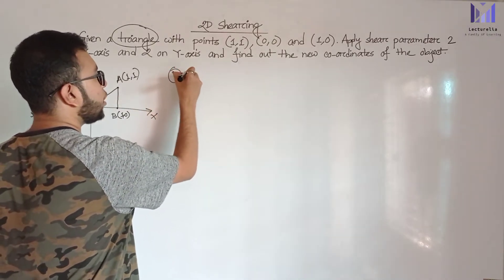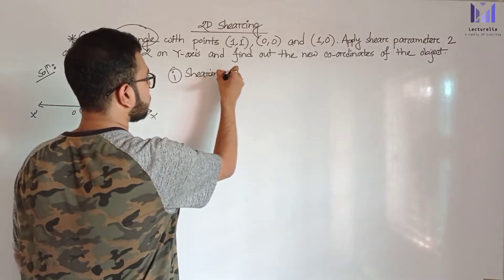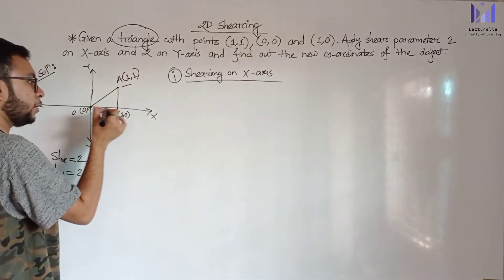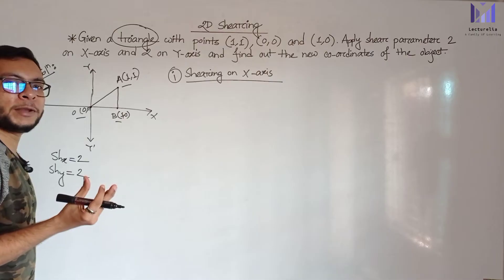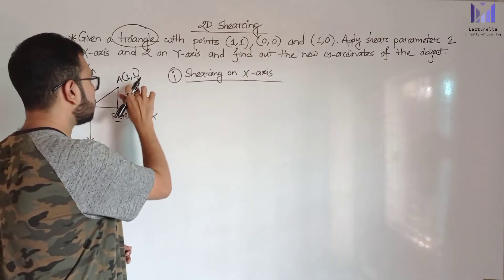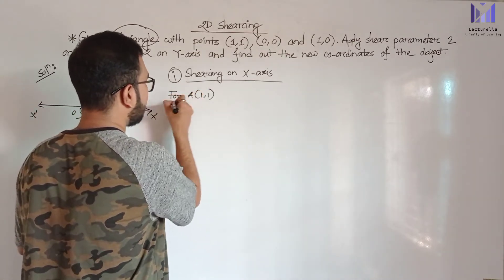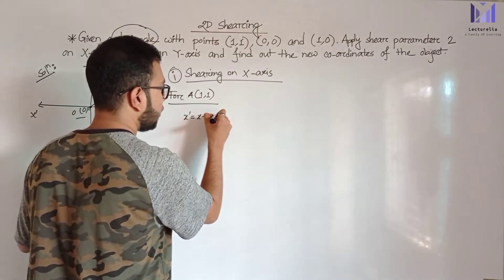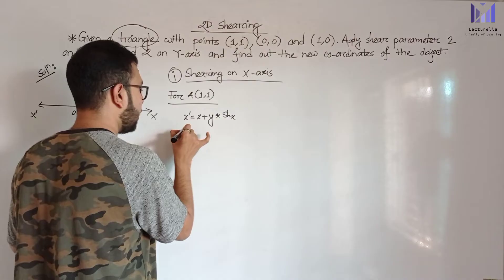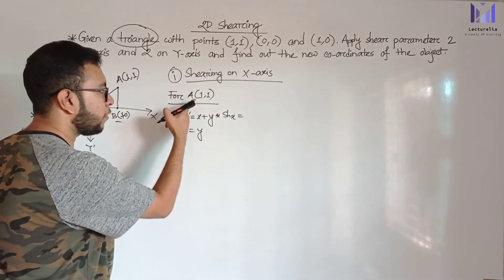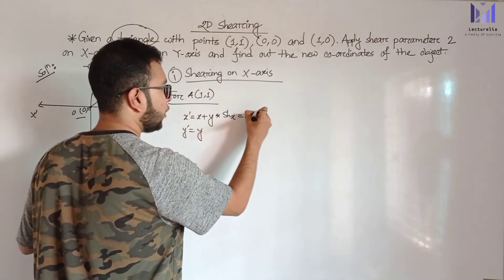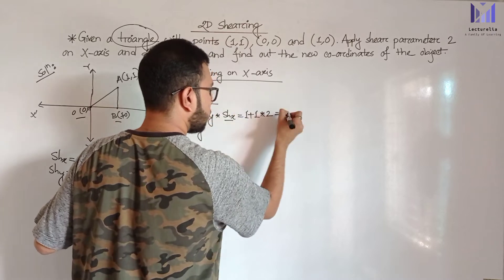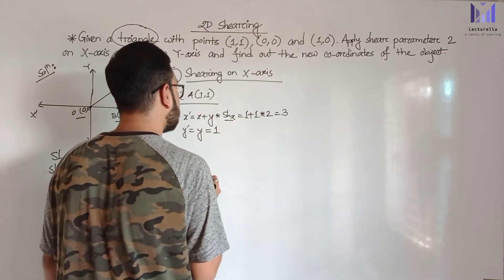Now for sharing on X-axis, we apply the formula. For point A(1,1): X prime equals X plus Y into shX. X prime equals 1 plus Y value 1 multiplied with shX which is 2. So 1 plus 1 into 2 equals 1 plus 2 equals 3. And Y prime equals Y, so Y prime equals 1.